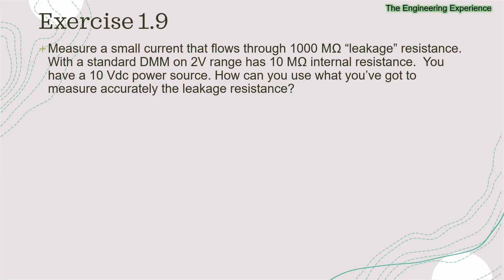Exercise 1.9. I'm going to summarise the question a little bit here. It says: measure a small current that flows through a 1000 MΩ resistor, labelled as a leakage resistor, with a standard digital multimeter on a 2V range, which has a 10 MΩ internal resistance. The question also says that you have a 10V power supply. The question is: how can you use all the information given to measure the leakage current on the resistance accurately?